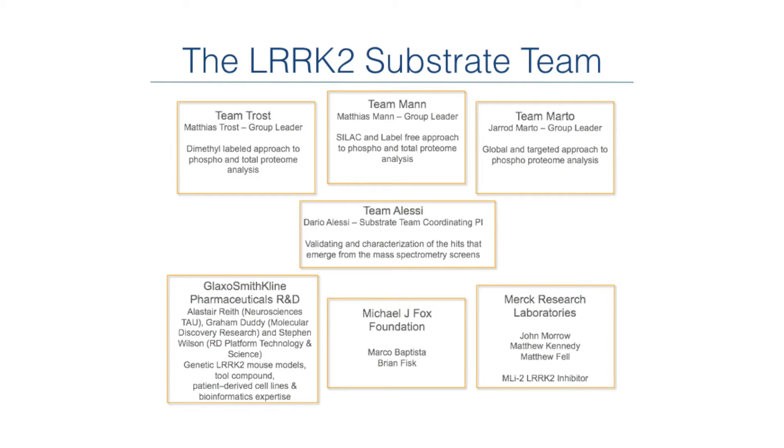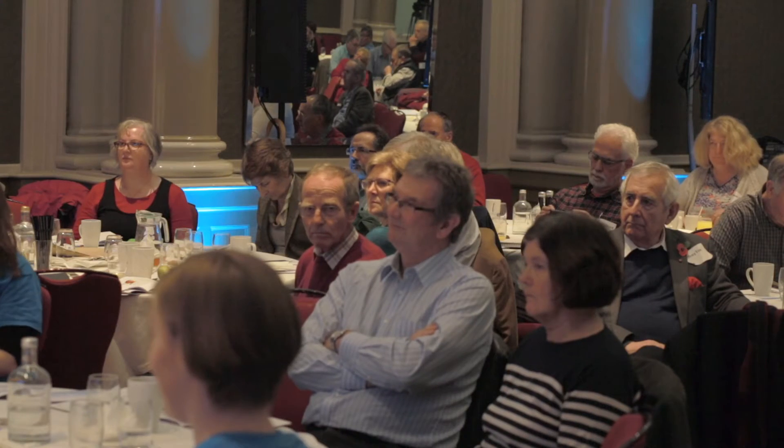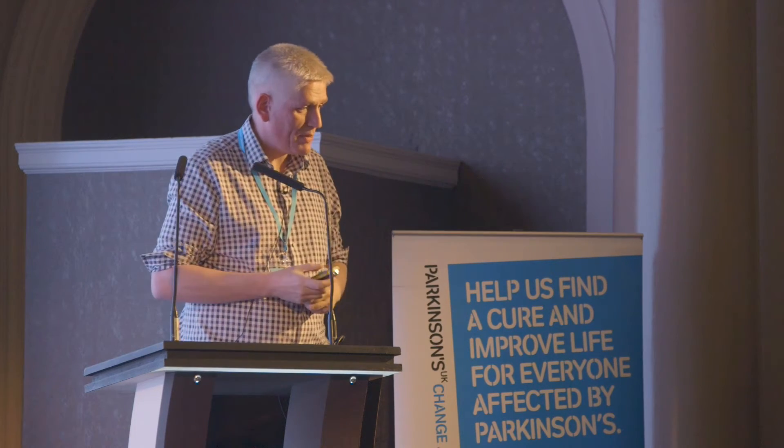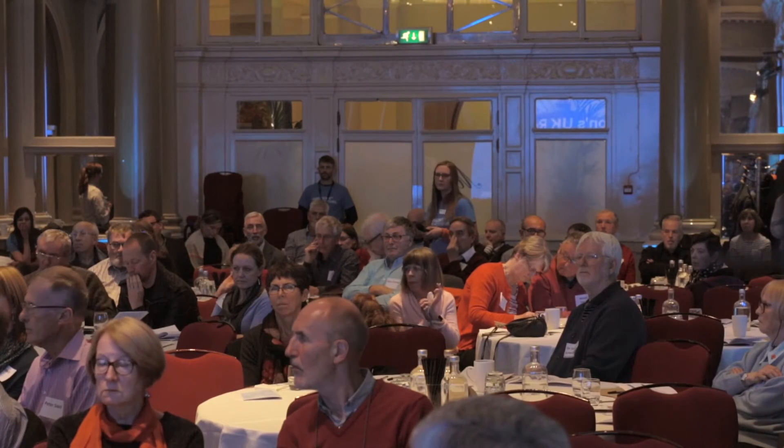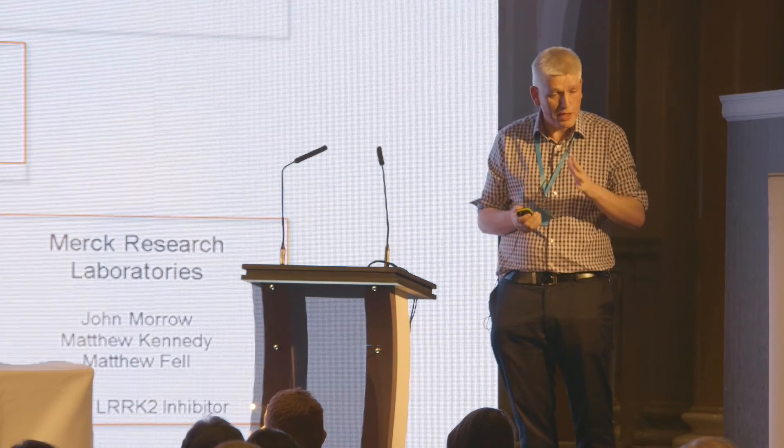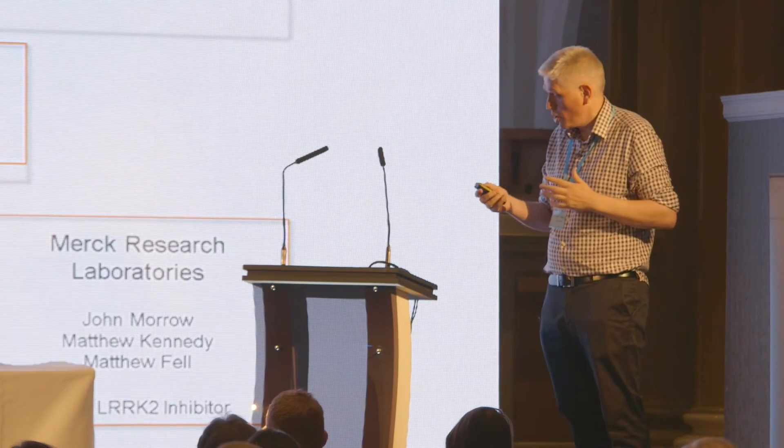We also worked with GSK, Merck, and the Michael J. Fox Foundation, who were very helpful in enabling all of this. The trick was to make genetically modified mice carrying the LRRK2 mutations that mimic Parkinson's disease and switch on the biology pathway, but also mice with mutations that killed the kinase activity and switched off the pathway. We then used mass spectrometry to look for the one substrate that went up with the active disease-causing mutation and disappeared when LRRK2 was inhibited.